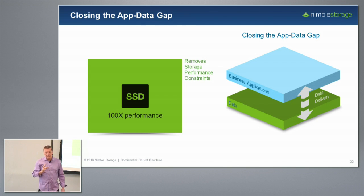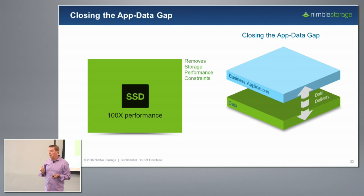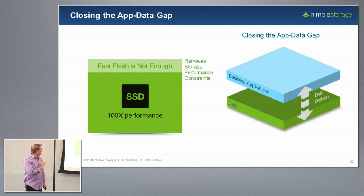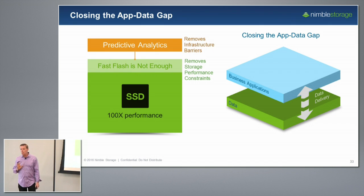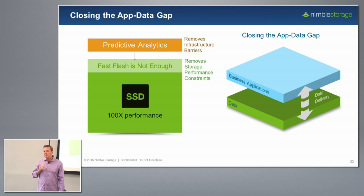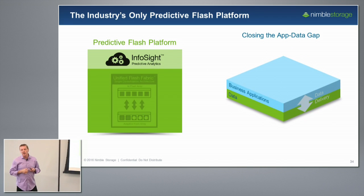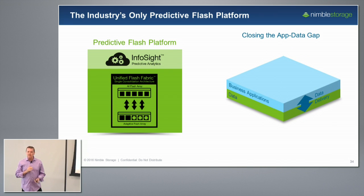As Gavin presented, our all-flash array takes care of part of the problem — when you have a storage system performing at sub-millisecond consistency, consistently delivering that sub-millisecond latency. But as we said, the problems aren't just storage, so it's not enough just to have fast flash. That obviously removes one element. More importantly, in our opinion, you absolutely have to have predictive analytics that look at all of the data all the way up the stack to the virtual machines, to really understand what's going on and inform customers as to where their issues are. It's that combined that we call the predictive flash platform — and it's that that closes the app data gap.